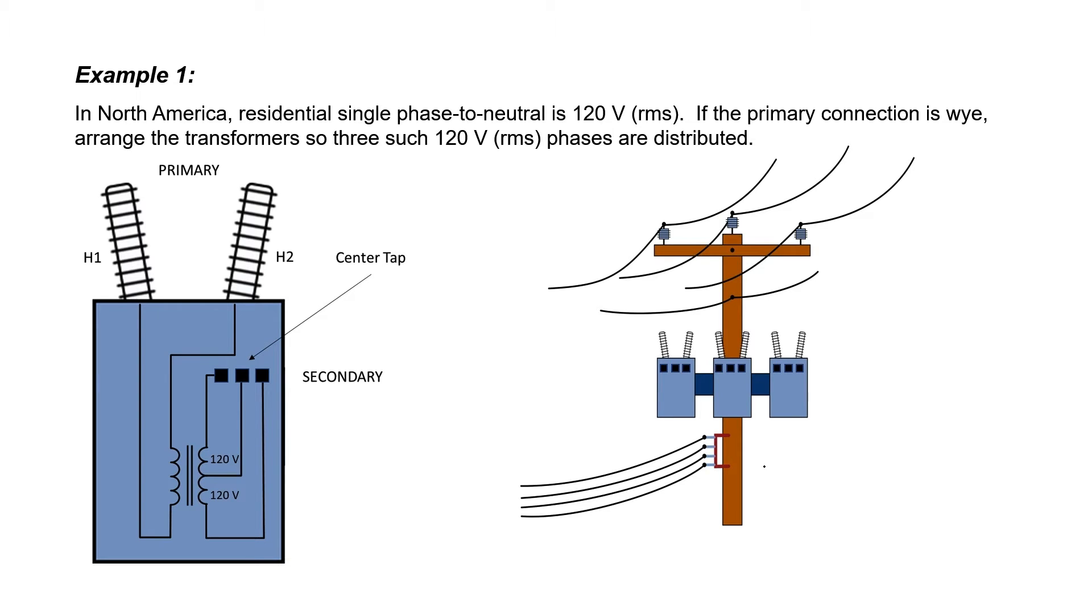Let's work three examples related to three-phase transformers here. In North America, residential single-phase to neutral is 120 volts RMS. We'll assume that the primary connection is Y, and in this problem, let's arrange the transformers so that three such phases, each at 120 volts, are distributed to the customer.